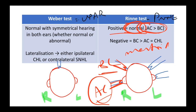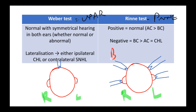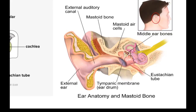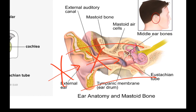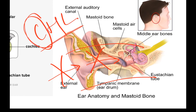But if the patient says bone conduction is better than air conduction, that means there is some issue in the transmission across the ear, and the patient is unable to hear air conduction better. This would mean the patient probably has a conductive hearing loss, because there is some problem in the conduction.